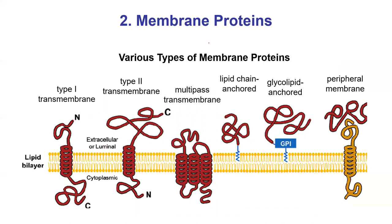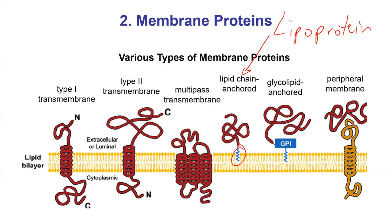Some proteins, like a lipoprotein, have a lipid attached to them that acts like an anchor into the membrane. There are also peripheral proteins that are not attached to the membrane at all, but are attached to another membrane protein. I worked on a protein called a penicillin-binding protein, which was anchored by one alpha helix — 20 amino acids that go across the plasma membrane.